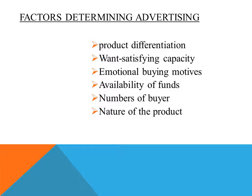The second one is Want Satisfied Capacity. It is important that the product must be capable of satisfying certain unfulfilled needs of the buyer. For example, if a new detergent powder is marketed and it is very effective in removing stains, such a quality may be highlighted in the advertisement.